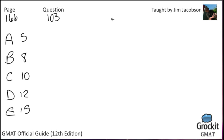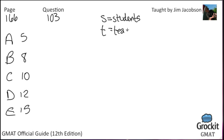If the student enrollment were to increase by 50 students and the number of teachers were to increase by 5, the ratio of students to teachers would then be 25 to 1. What is the present number of teachers? First off, we want to identify our variables. We'll have S equal the students. S is not the most awesome variable because of its resemblance to a 5, depending on your penmanship.